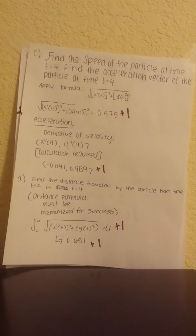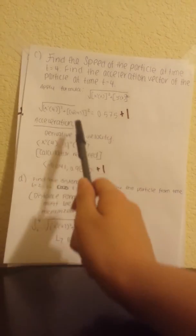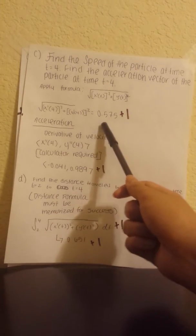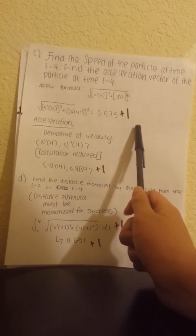For part C, find the speed of the particle at time t equals 4. In order to do the speed, you need to know the speed formula, which is the square root of derivative of x squared plus derivative of y squared. This is a calculator problem. All we do is you're going to plug this into your calculator, and then you plug 4 in, and then you would get 0.575, and that's where you get one point for your speed.